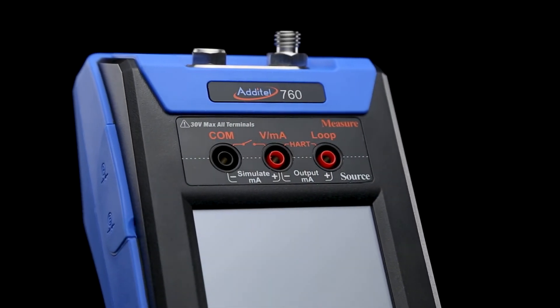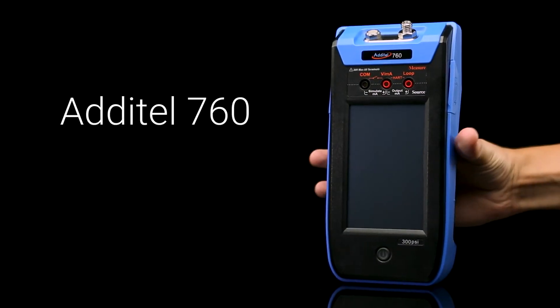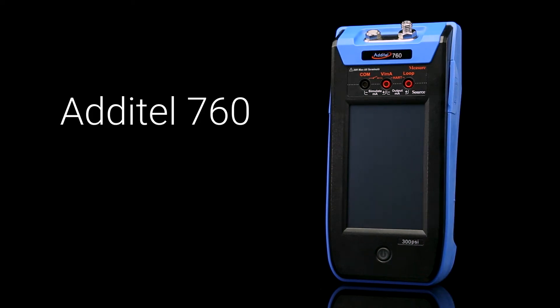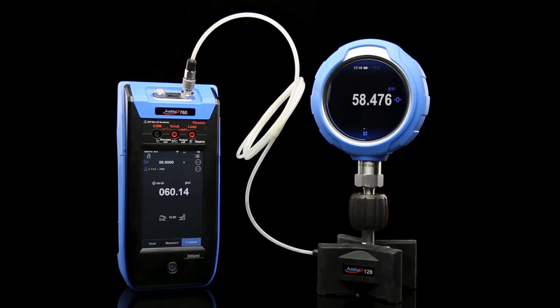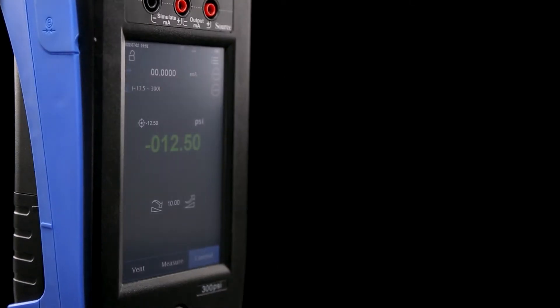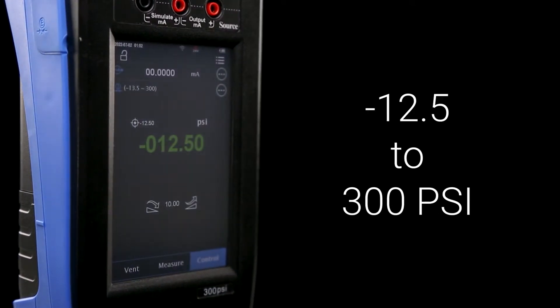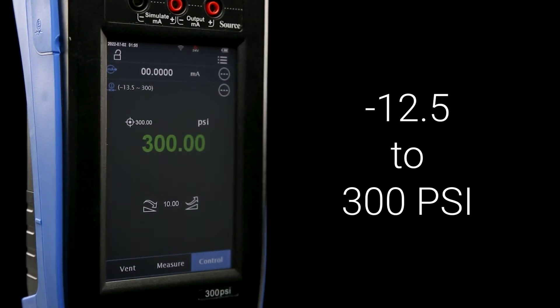Fully automated pressure calibration is now available in the palm of your hand with the Adatel 760. The 760 is the fastest and easiest way to calibrate pressure devices in the field, with self-contained pressure generation ranging from negative 12.5 up to 300 psi.